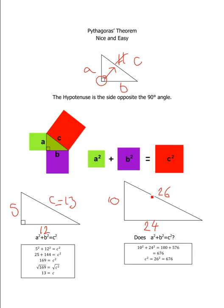We could use Pythagoras' Theorem to see whether this is a right-angled triangle. If Pythagoras' Theorem is correct, this will be a right-angled triangle if the square of 26 is equal to the square of 10 plus the square of 24. Let's have a look.